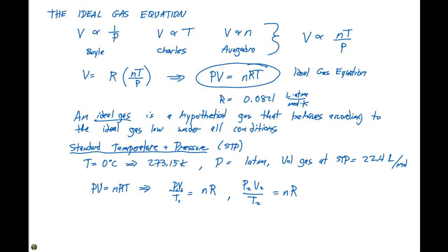If we set the NR equal to each other, and set up this equation. We can derive something that says P1, V1, over T1 is going to equal P2, V2, over T2.